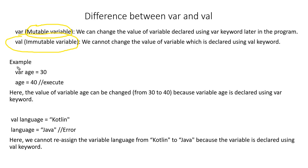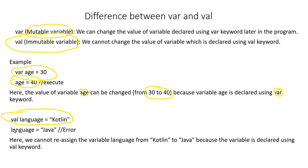For example, here we have var h equal to 30, and later we reassign it a value of 40. So var h is first equal to 30, and then h is equal to 40. The value of variable h can be changed from 30 to 40 because it is declared using the var keyword. Here you can see that val language is equal to Kotlin.